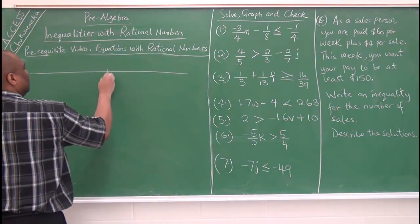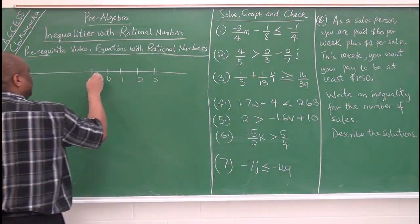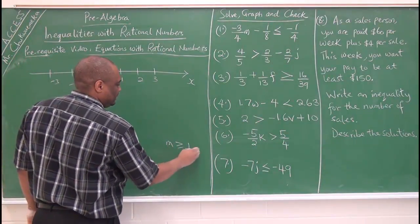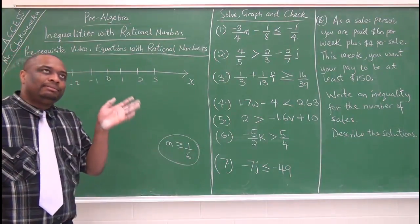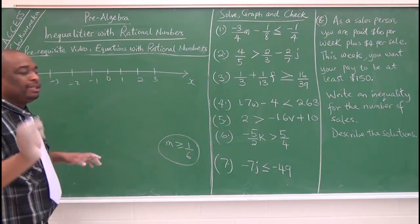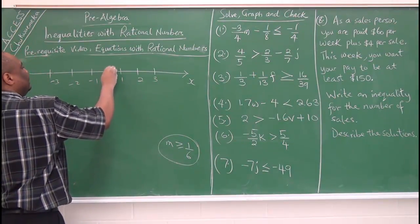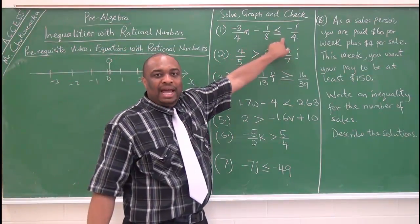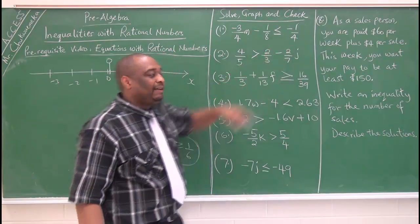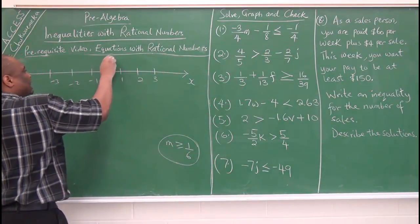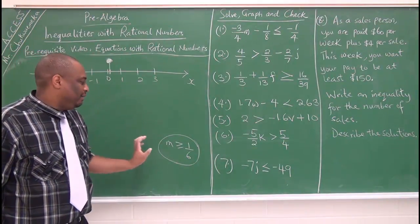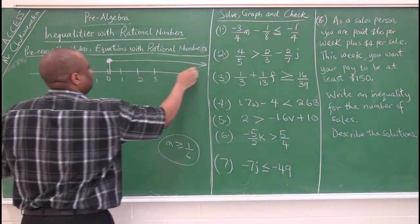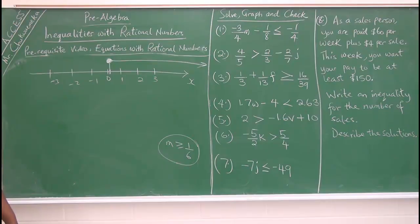Now let's graph it. Draw a number line: negative 3, negative 2, negative 1, 0, 1, 2, 3. Since m is greater than or equal to 1 over 6, which is about 0.16, place the point between 0 and 1. Because there is an equal sign, this is a closed interval — shade the circle. Numbers greater than or equal to 1 over 6 are to the right, so the arrow goes right.